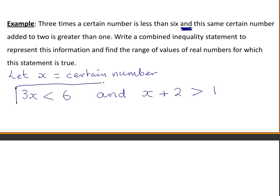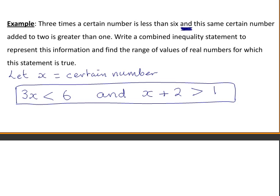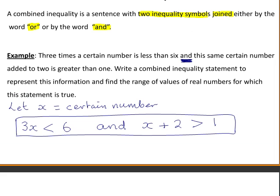We have now written a combined inequality statement — it contains two inequality symbols joined by the word 'and'. Because the word 'and' is used, this is an example of a conjunction. We must solve for values of x that make both statements true, which gives us the range of values of real numbers the question asked for.